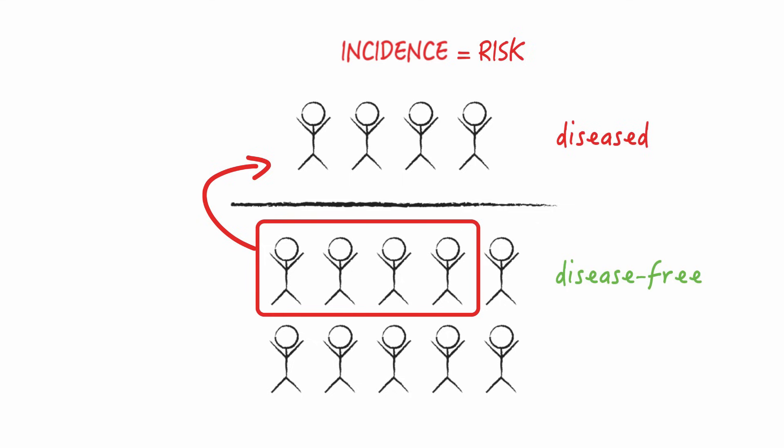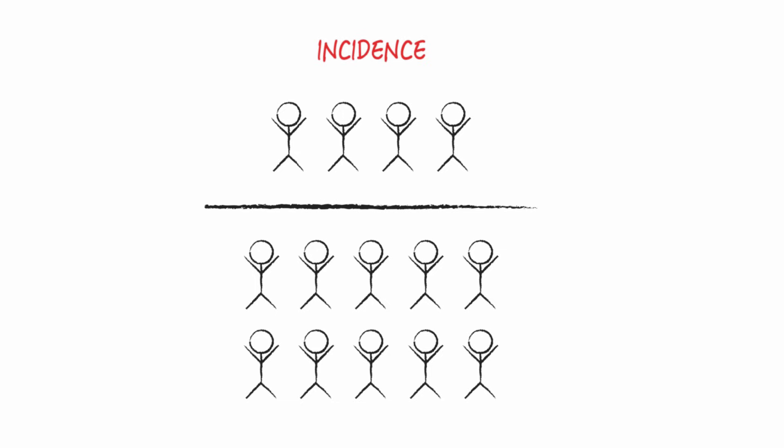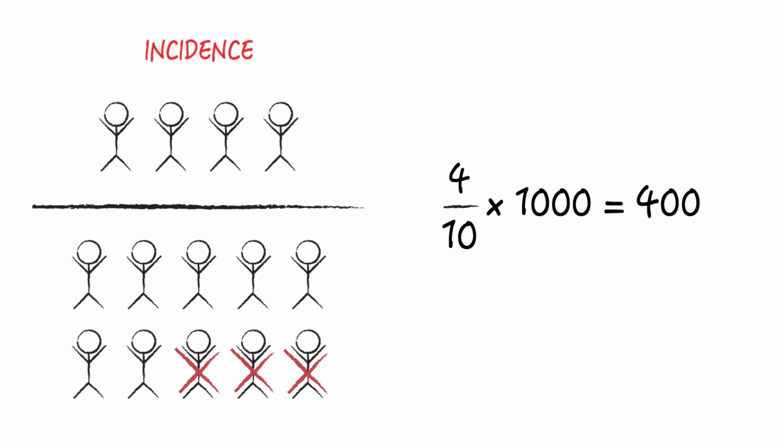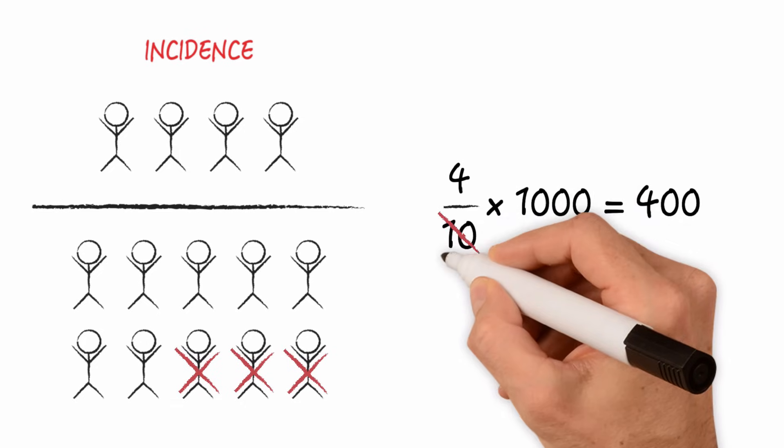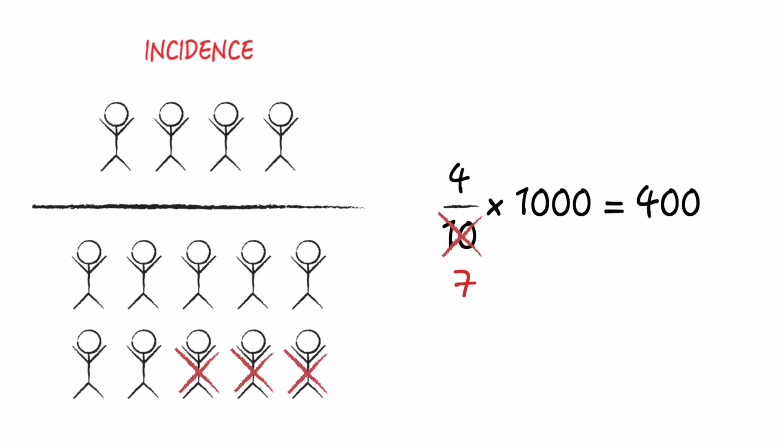We said that everyone in the denominator must have the potential to become a member of the numerator or the disease group. Let's come back to our study of uterine cancer. If three women of our fictitious population had their uteruses removed, if they had undergone hysterectomy in other words, they would no longer have the potential to become part of the numerator. So instead of 4 divided by 10 it would now be 4 divided by 7 times 1000 equals a new fictitious incidence rate of 570 per 1000.